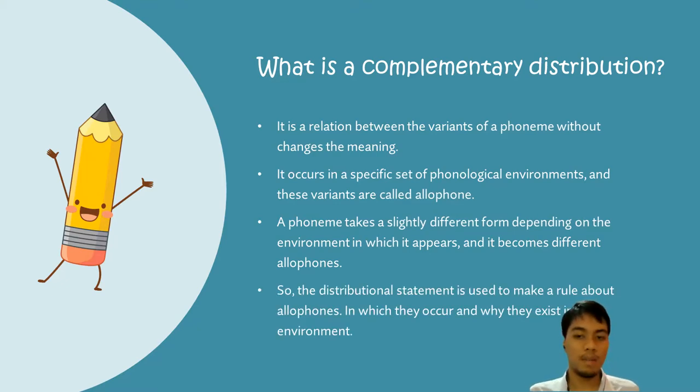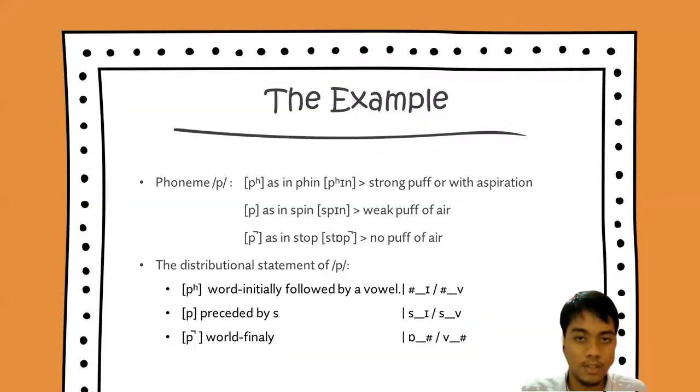So the distributional statement is used to make a rule about allophones, in which they occur and why they exist in the environment. The example here, in the phoneme, like in the previous slide, we can write a formula like this: P preceded by S, and P in the word finally. This is an example of how we make a distributional statement and explain about that thing.